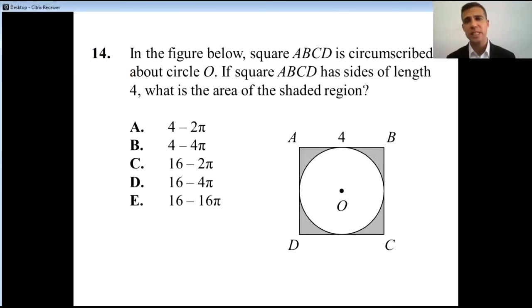In the figure below, square ABCD is circumscribed about circle O. If square ABCD has sides of length 4, what is the area of the shaded region?